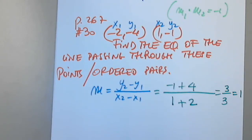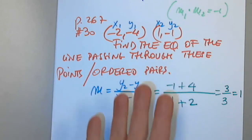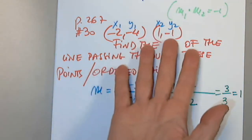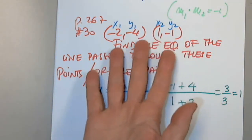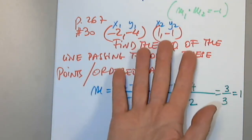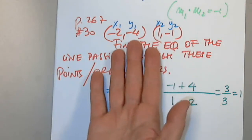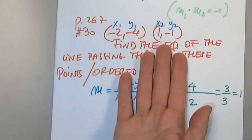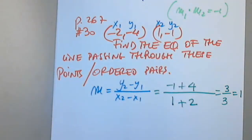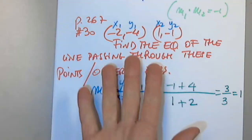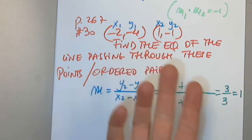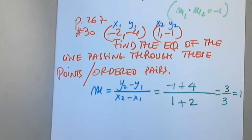Next, I determine whether any of these two points is the y-intercept. Because if it is, I will use y equals mx plus b and I'm done. If I don't have the y-intercept, then I have to use the point-slope form.